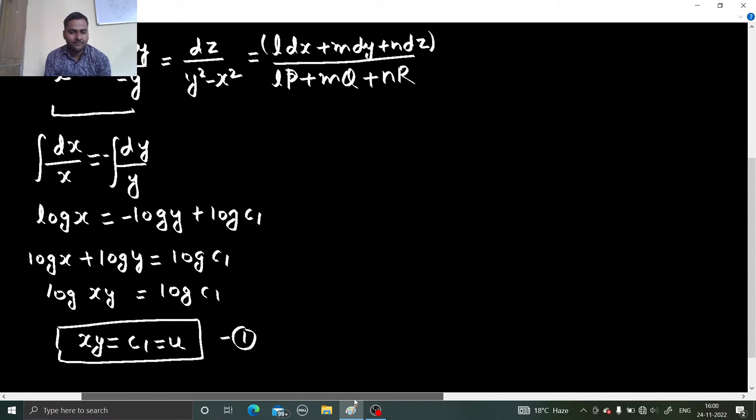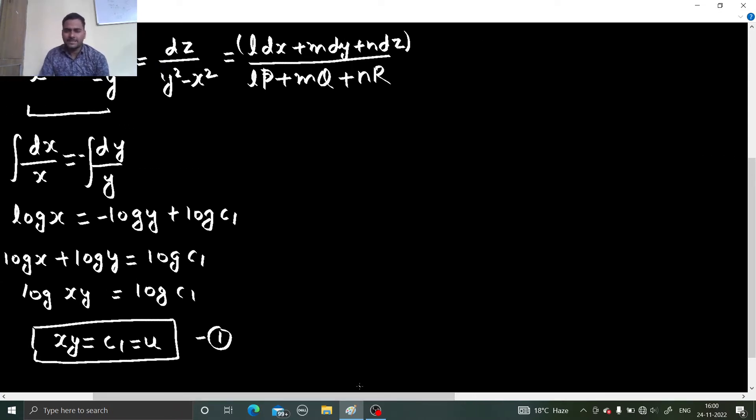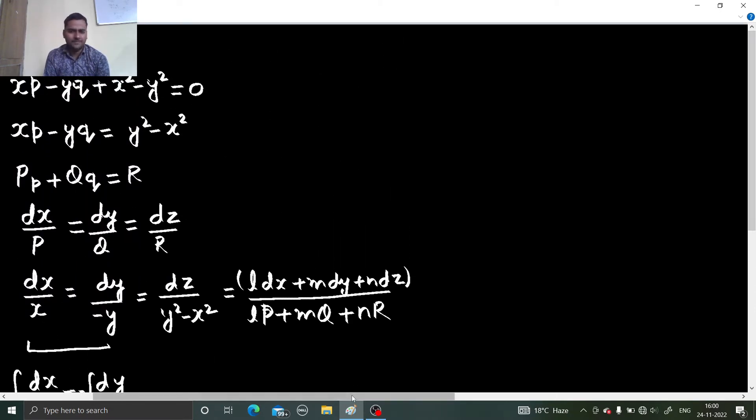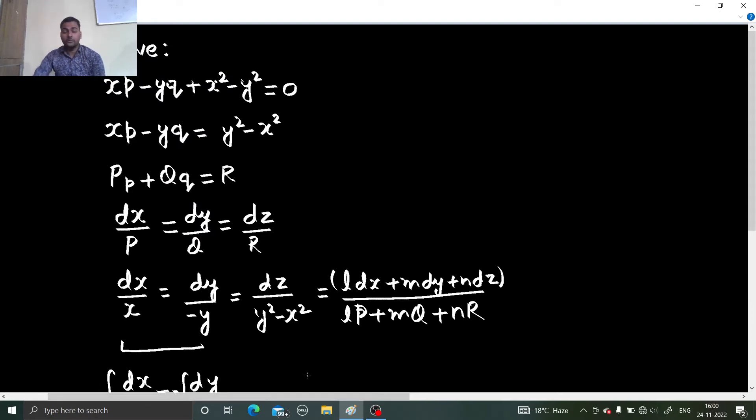What about second one? Second one is purely subjective. I personally try to think of the simplest multiplier which can be possible. So if I carefully see on summing this, let me write p, q and r once again. My p is x, my q is minus y and my r is y square minus x square. If I right now add them, it is not becoming zero. So what should I do?